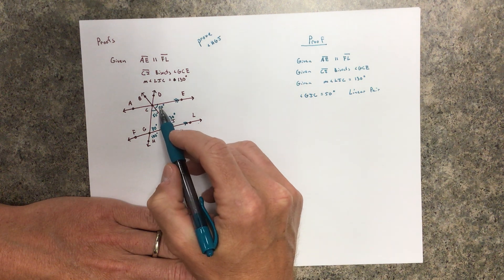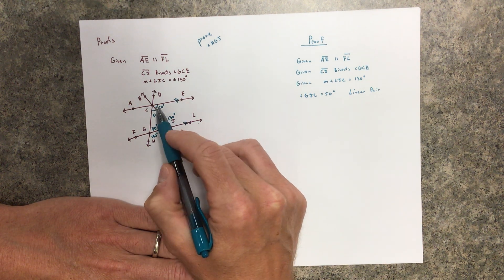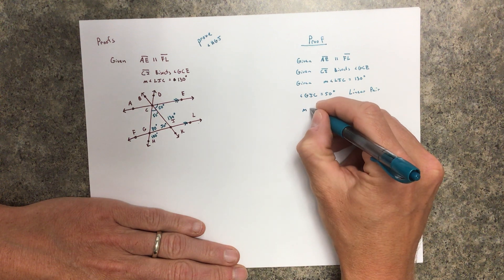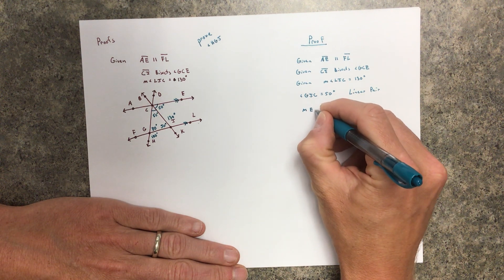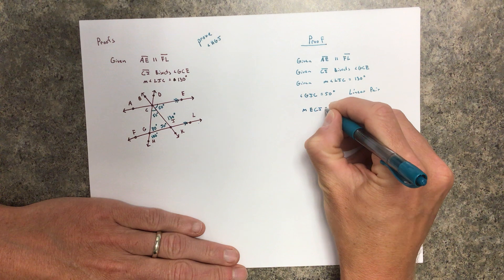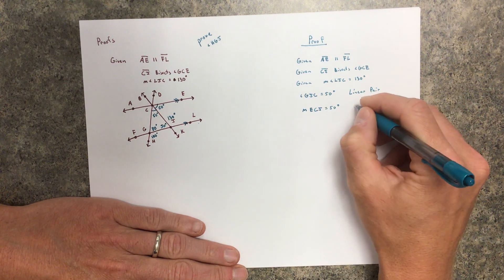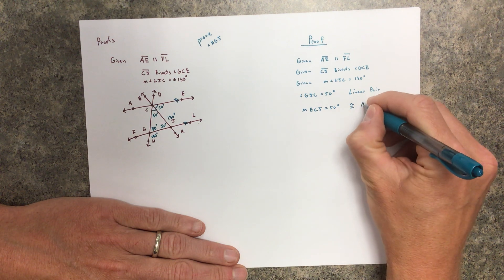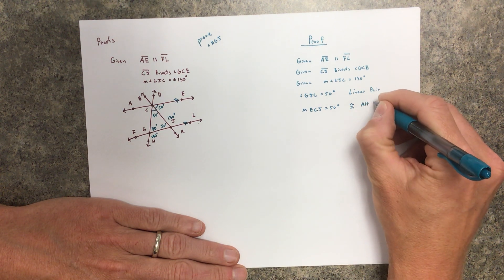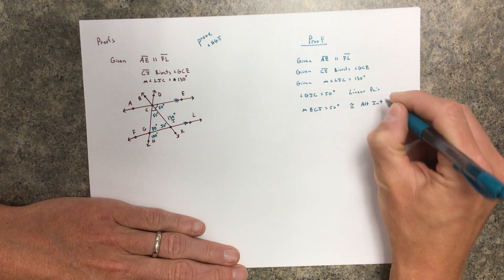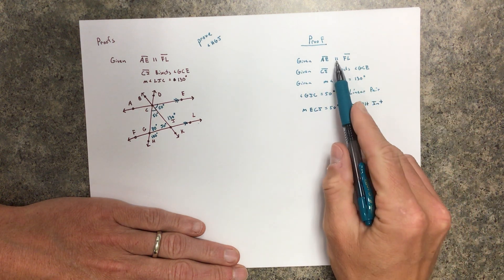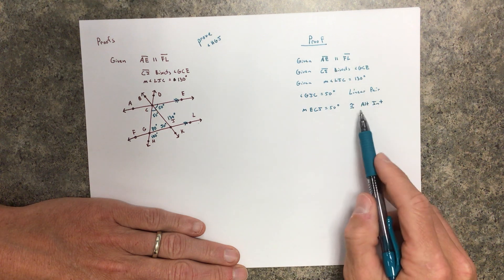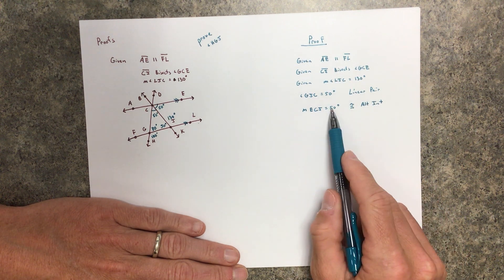Now the next thing, the measure of ECJ is also 50 degrees. Why? Because we have congruent alternate interiors. Why? Because we already know that the lines are parallel. If the lines are parallel, then we have congruent alternate interiors. So then I know that's 50.